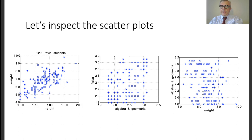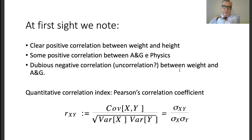The final scatter plot is weight against algebra and geometry. Here you cannot see a very clear correlation, but there is the doubt that you could have some weak negative correlation. If the weight is very low, it's unlikely to have a low mark in algebra and geometry, and if the weight is large, it's difficult to have top marks. So: clear positive correlation between weight and height, positive correlation between algebra and geometry and physics, and some dubious negative correlation between weight and algebra and geometry. How can we pass from this visual inspection to a more robust statistical assessment?